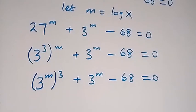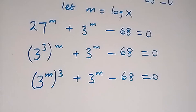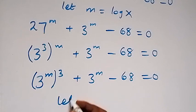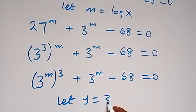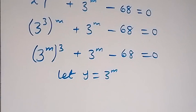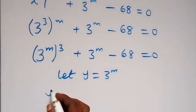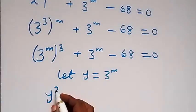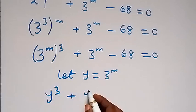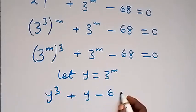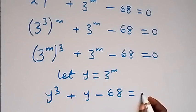From here we have 3 raised to power m. Let's use a letter to represent that — let y be equal to 3 raised to power m. Then this equation will become y raised to power 3 plus y minus 68 equals 0.